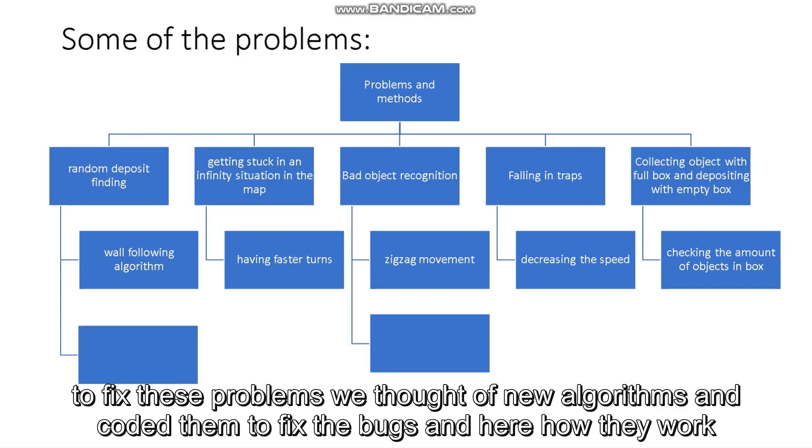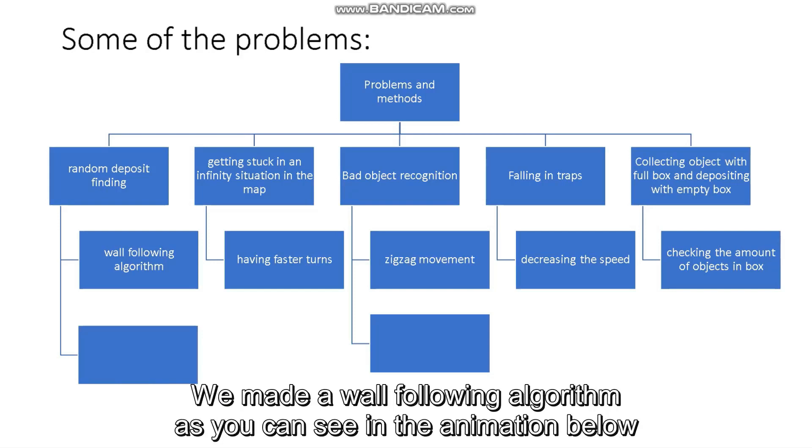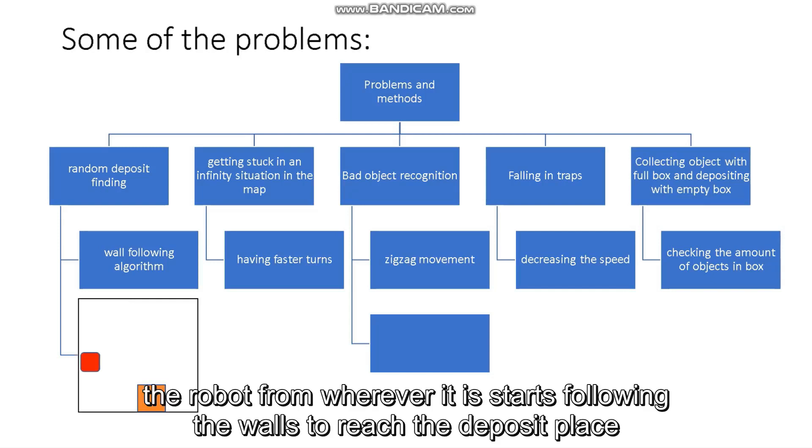To fix these problems, we followed some new algorithms and coded them to fix the bugs. We made a wall following algorithm, as you can see in the animation below. The robot, from wherever it is, starts following the walls to reach the deposit place.